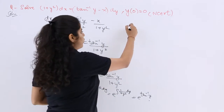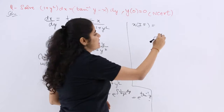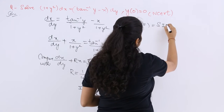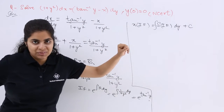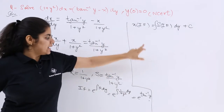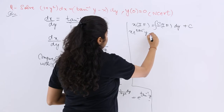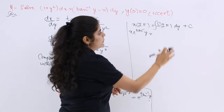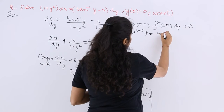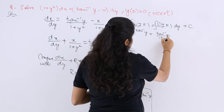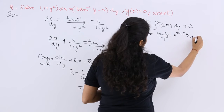After obtaining the integrating factor, the next step is: x × (integrating factor) = ∫S × (integrating factor) dy + c. So x × e^(tan⁻¹y) = ∫[tan⁻¹y/(1 + y²)] × e^(tan⁻¹y) dy + c.